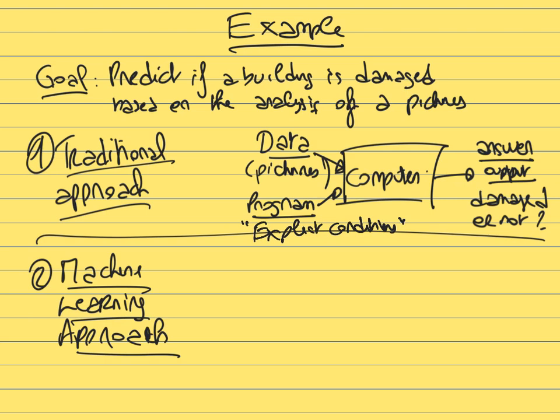Based on those explicit rules and conditions, the computer can recognize cracks and give you an answer. If you provide new pictures, it can tell you whether it recognizes a crack — and therefore whether the building is damaged. That's the traditional approach.